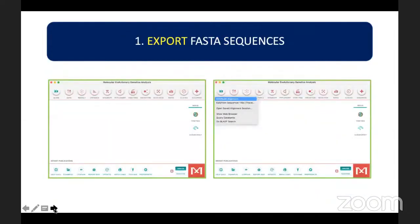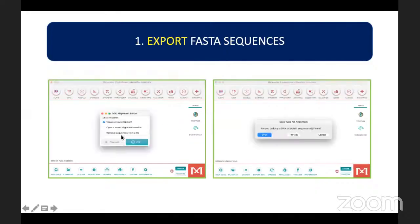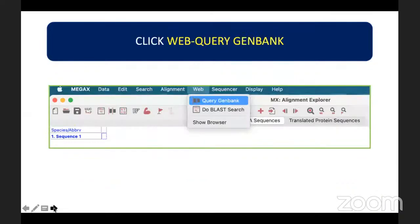For the first step, to export FASTA sequences into the MEGA X software, click on the Align button and then Edit/Build Alignment. Then create a new alignment and choose the type of molecule — in this case we are dealing with DNA sequences, so click DNA. In order to add new sequences using the accession numbers of the organism under study, click Web and Query GenBank.